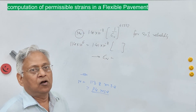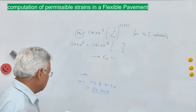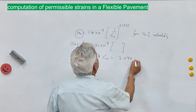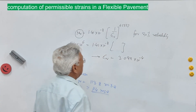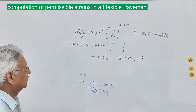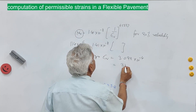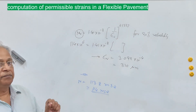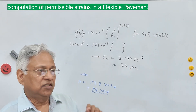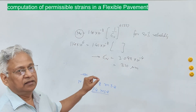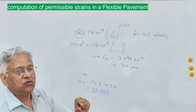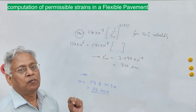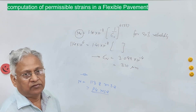Solving the rutting equation gives ε_v = 3.099 × 10^(−4), which is the permissible vertical compressive strain at top of subgrade — approximately 310 microstrain. This permissible strain should be compared with the actually computed strain at the top of subgrade as per IIT PAVE software.